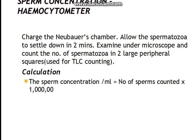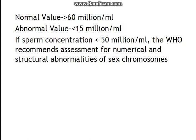We then examine the chamber under the microscope and count the number of spermatozoa in the two large peripheral squares used for TLC counting. We calculate the concentration per ml by multiplying the number of sperms counted by 1 lakh. The normal value is more than 60 million per ml, and the abnormal value is less than 15 million per ml.